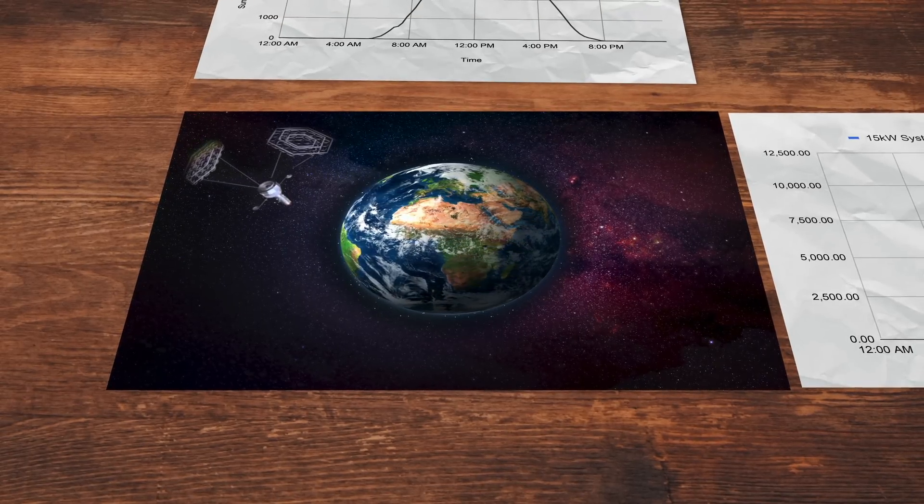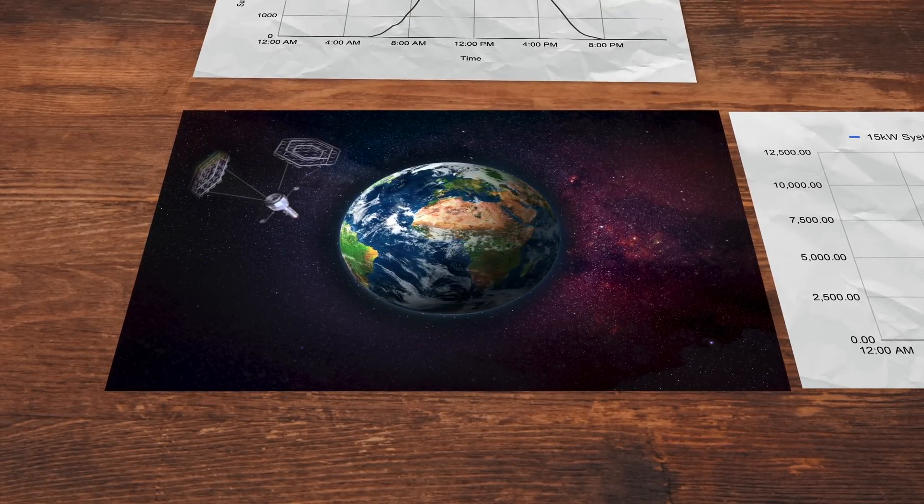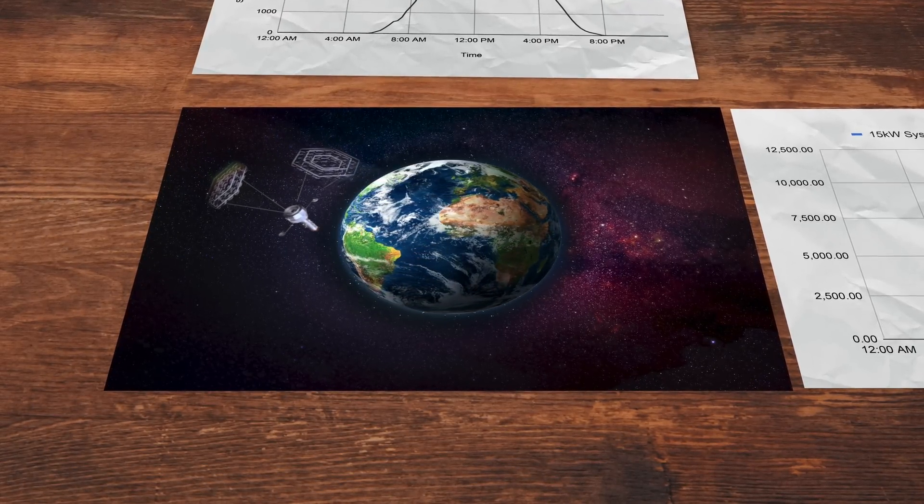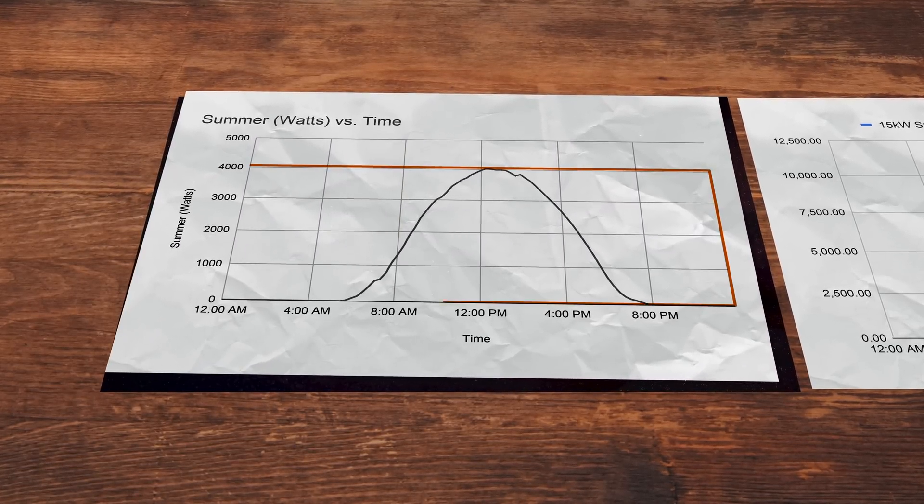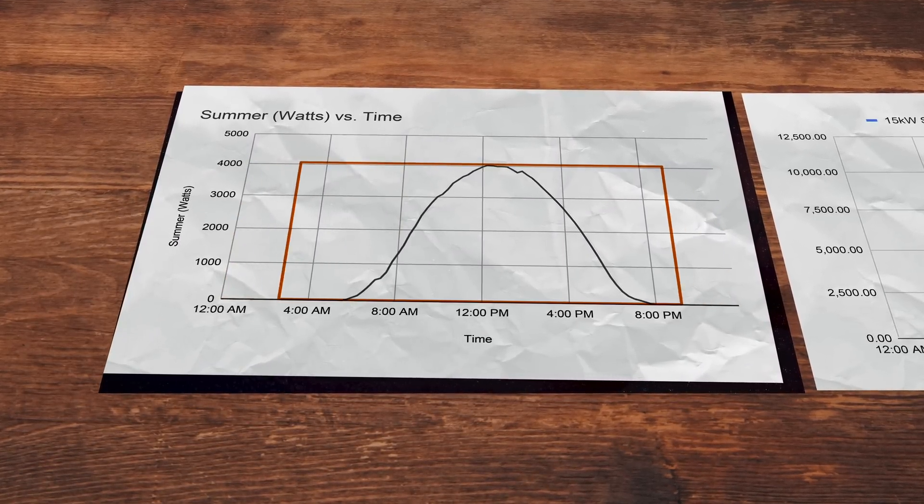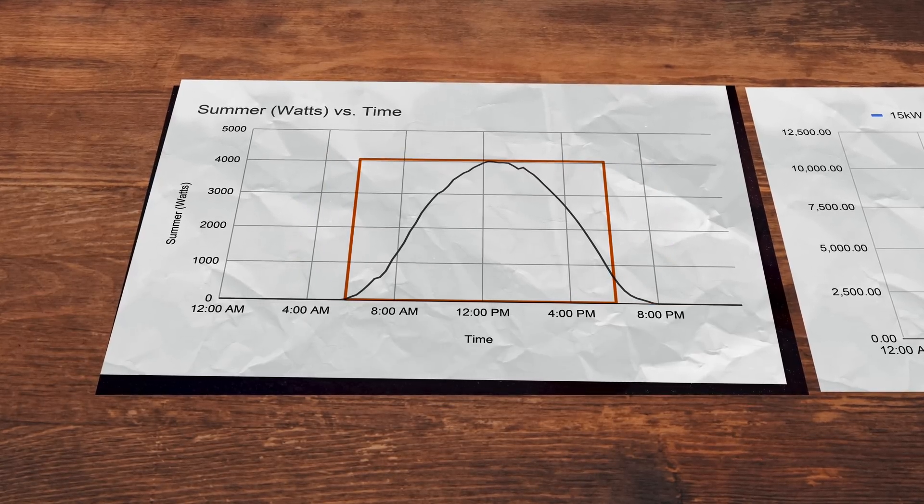Before we talk about why something as ambitious as a solar farm in space makes sense, let's talk about the limitations of land-based solar. Here's a chart showing an average sunny day in San Diego. You might be tempted to think that solar panels produce energy about half the time, but it's actually a fair bit less.